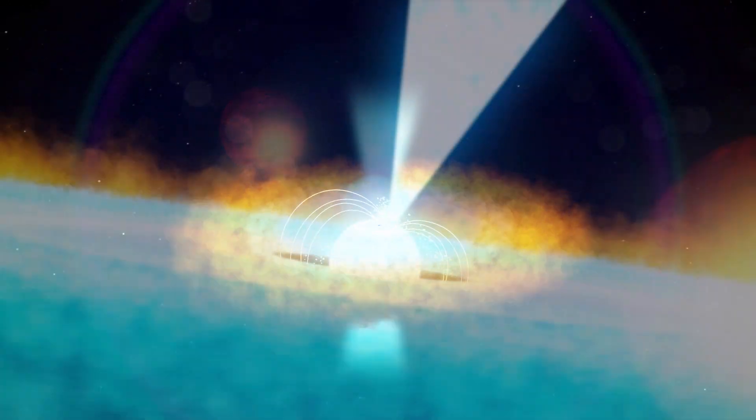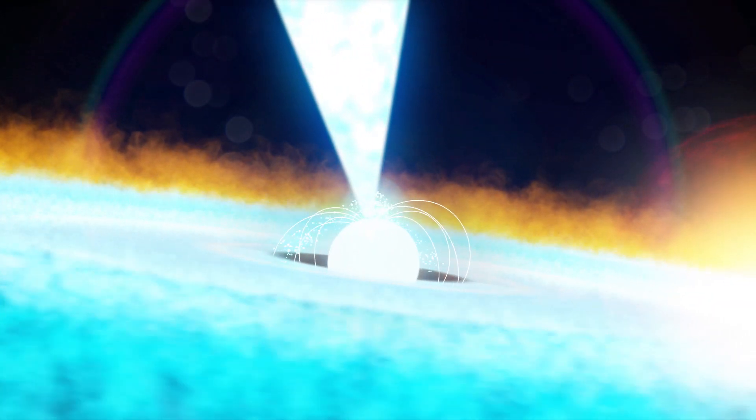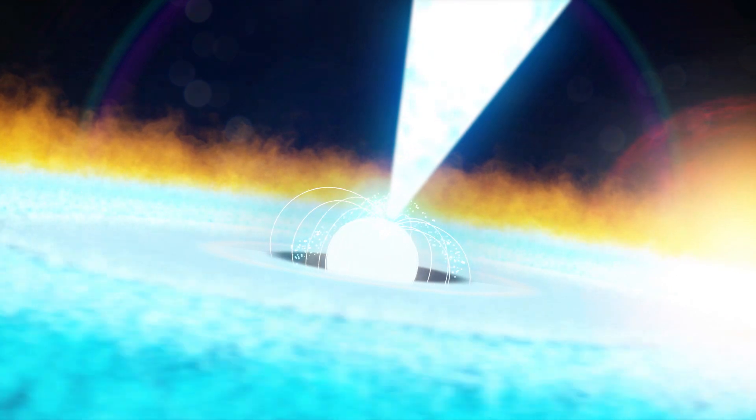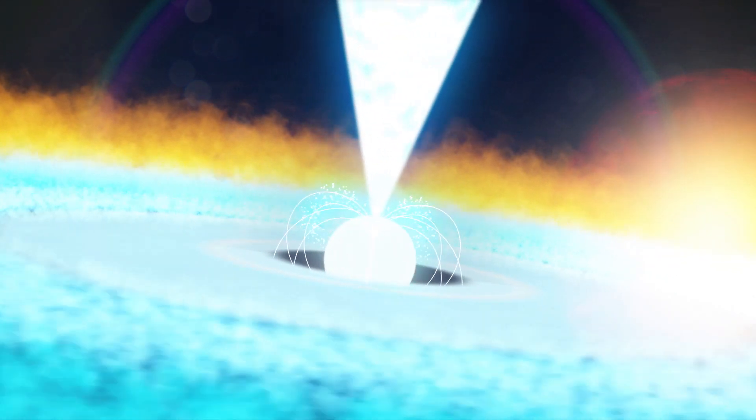Here, a pulsar, a rapidly spinning neutron star, draws gas from its companion, an object called a brown dwarf that is larger than a planet but less massive than a star.